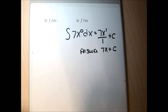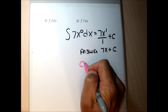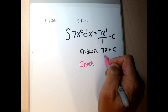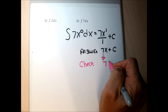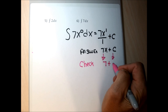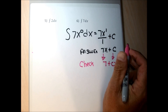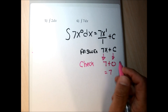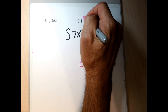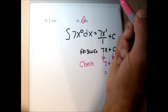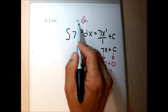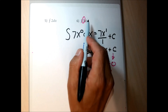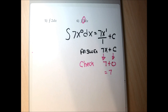To check: the derivative of 7x is just 7, and the derivative of C is 0, giving 7. That's exactly what I'm trying to find. When I take the derivative of my answer, it should equal what's between the integral sign and the dx symbol — and that's exactly what happened here.